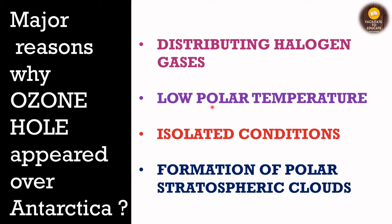The third and most important point is the formation of polar stratospheric clouds. These clouds form in both Antarctica and the Arctic, but they form for five to six months in Antarctica versus only 10 to 60 days in winters in the northern pole. These polar stratospheric clouds act as reaction sites for CFCs to give off chlorine, which then takes part in ozone layer depletion. So the four factors are: distribution of halogen gases, low polar temperature, isolated conditions, and formation of polar stratospheric clouds.